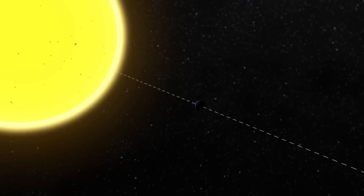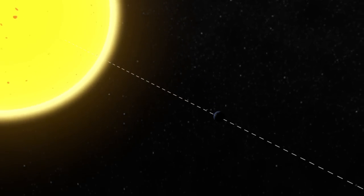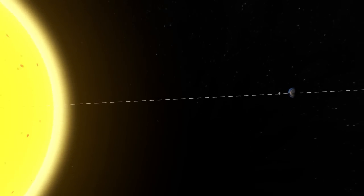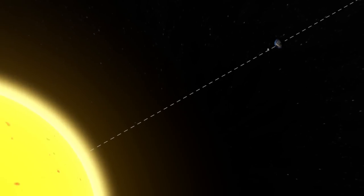Solar eclipses occur when a new moon moves into a position of direct alignment with the sun and the Earth. The line-up is not precise enough for this to happen every month, but when it does, the results are spectacular.